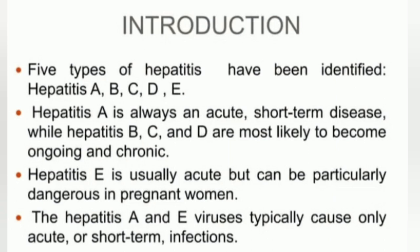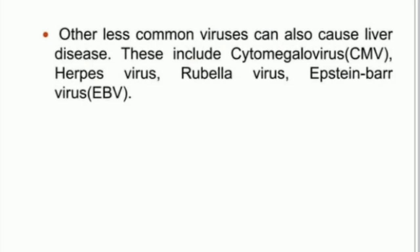Hepatitis A is always an acute, short-term disease, while Hepatitis B, C, and D are most likely to become ongoing and chronic. Hepatitis E is usually acute but can be particularly dangerous. Hepatitis A and E viruses typically cause acute and short-term infections. Other less common viruses can also cause liver disease: cytomegalovirus, herpesvirus, rubella virus, and Epstein-Barr virus.